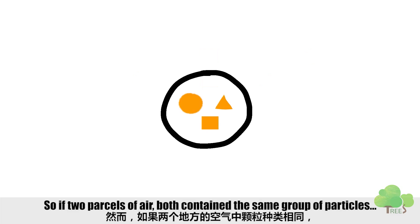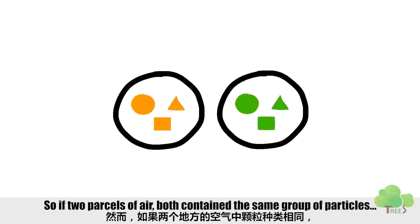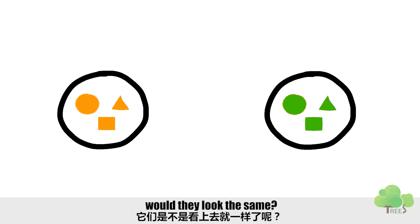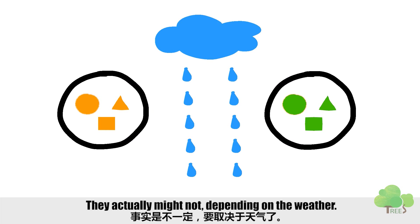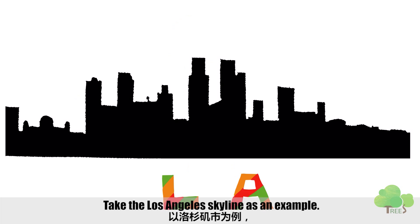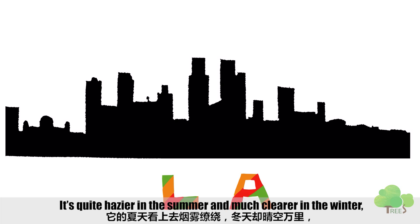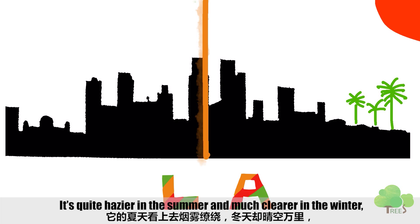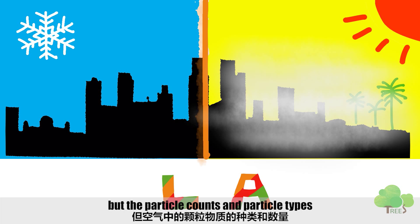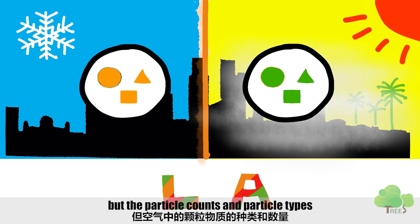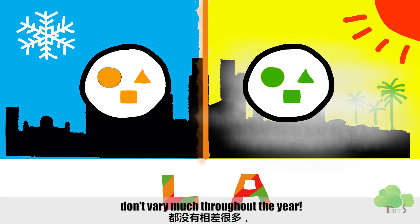So if two parcels of air both contain the same groups of particles, would they look the same? They actually might not, depending on the weather. Take the Los Angeles skyline as an example. It's quite hazy in the summer and much clearer in the winter, but the particle counts and particle types don't vary much throughout the year.